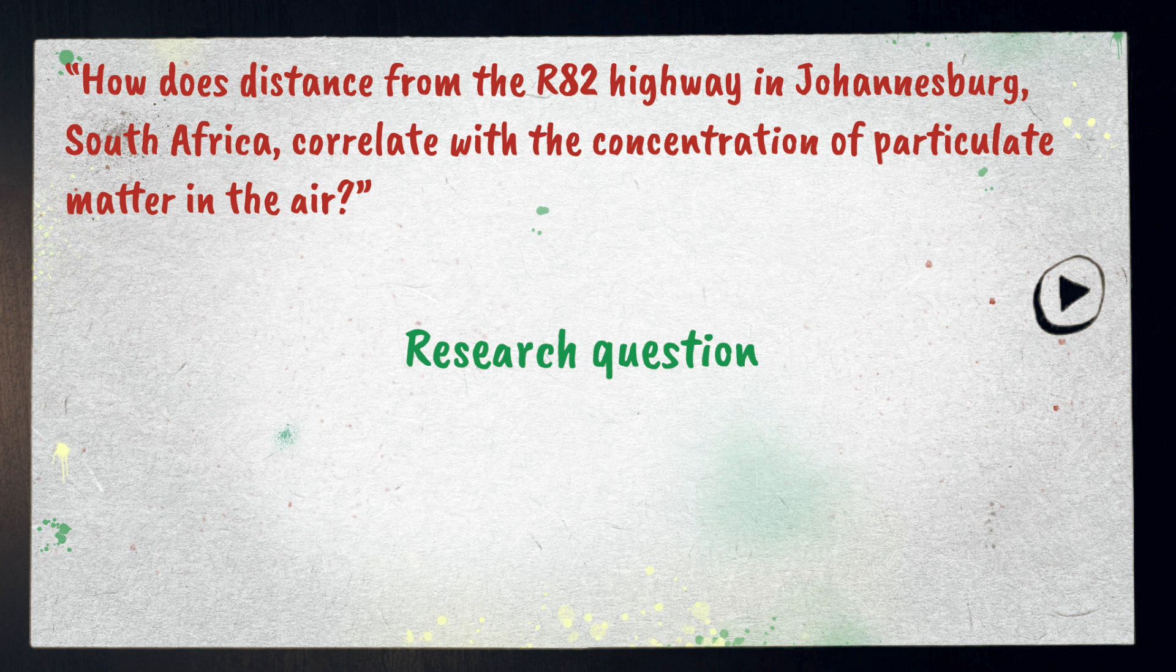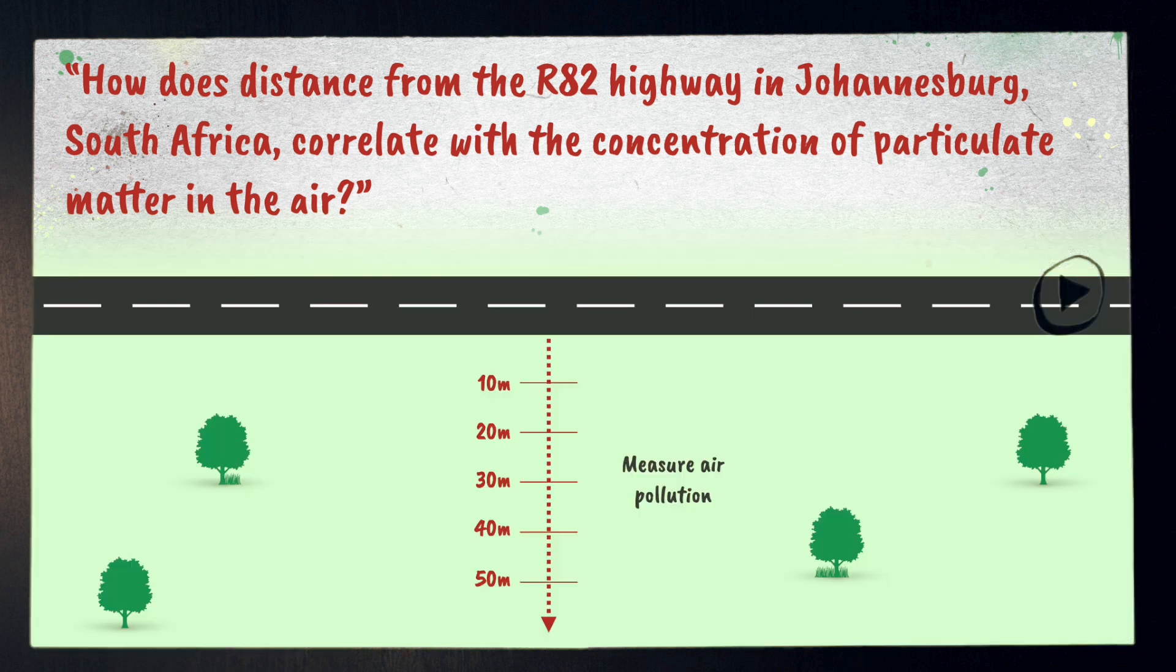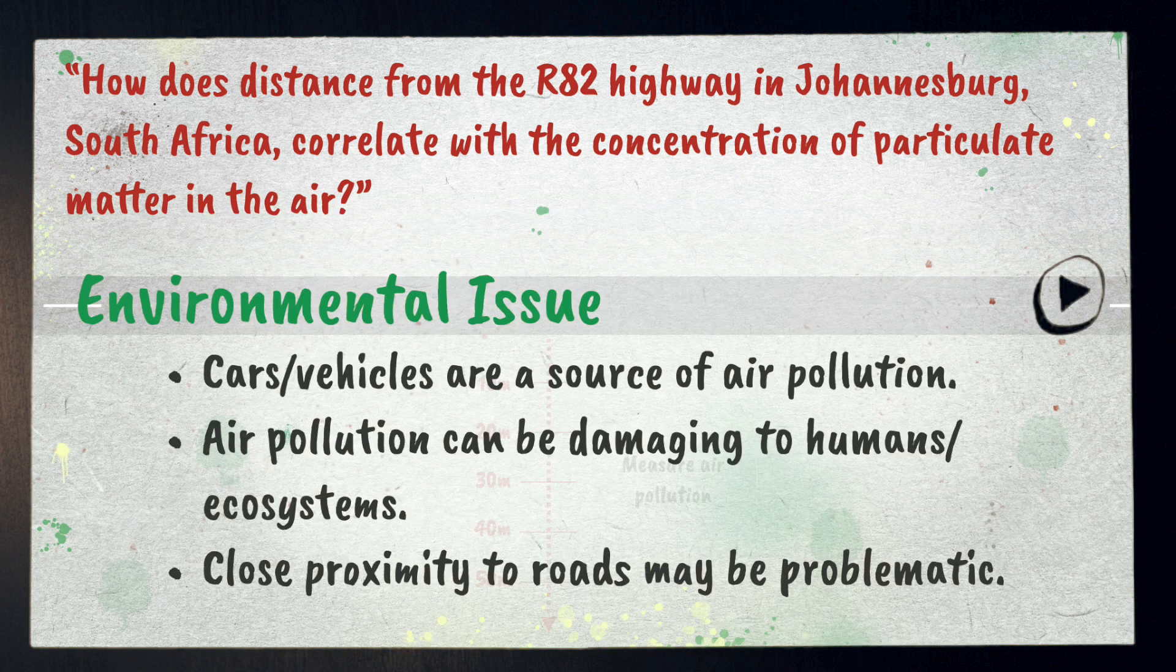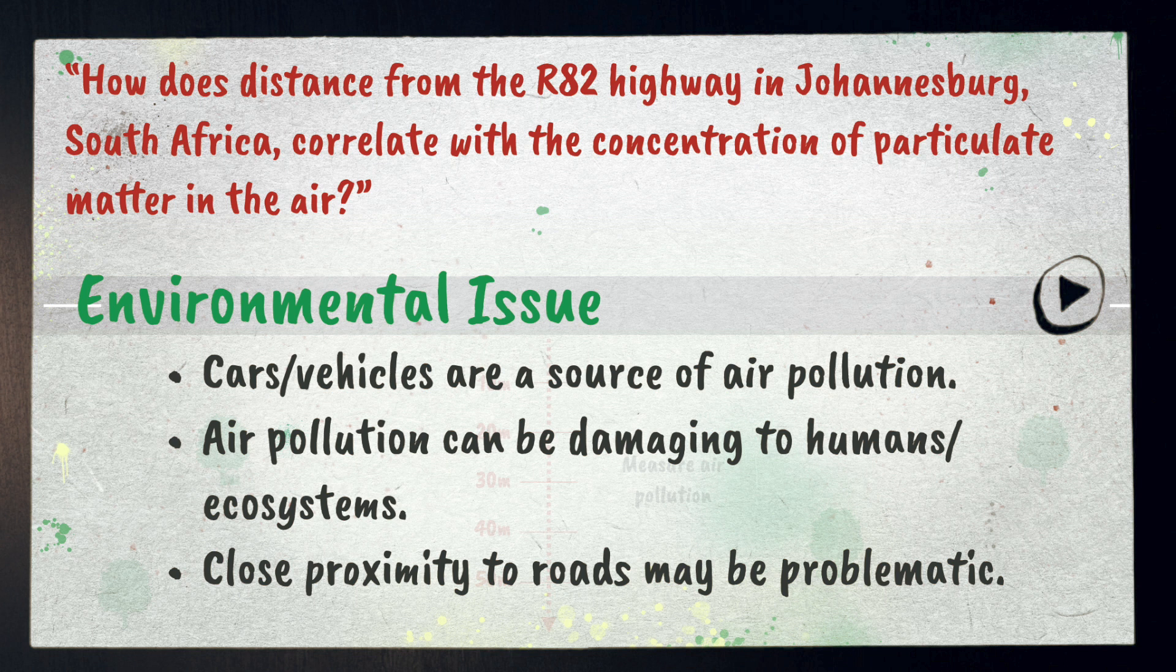The research question was: How does distance from the R82 highway in Johannesburg, South Africa correlate with the concentration of particulate matter in the air? The method involved collecting data along a gradient moving away from the road. The environmental issue would be something along the lines of cars being a source of air pollution which is damaging to humans and ecosystems, and being in close proximity to roads may be problematic.